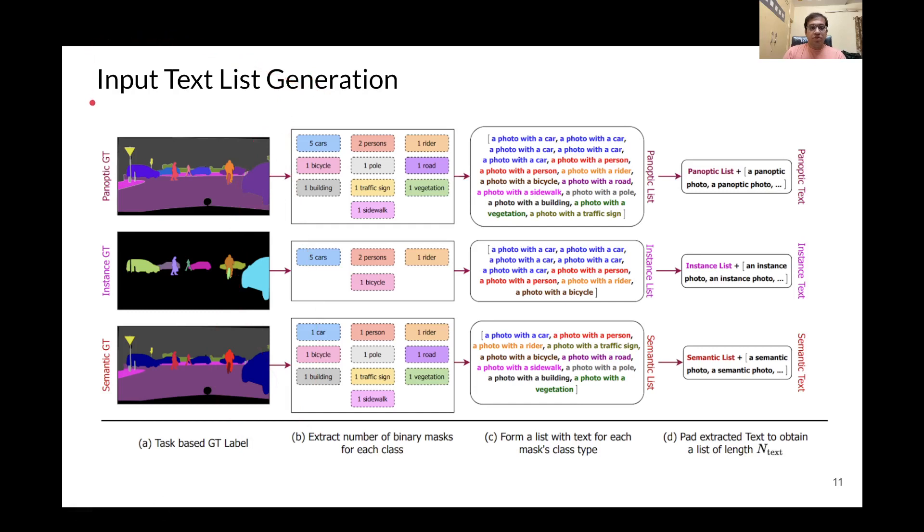On this slide, we show the process of our input text list generation, where we first extract the number of binary masks for each class depending on the ground-truth label. Then, we form a list with text for each mask's class type. And then, we pad the extracted text to obtain a list of constant length N_text.